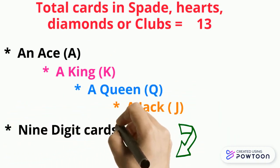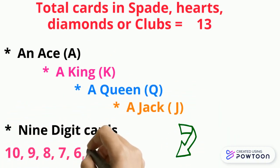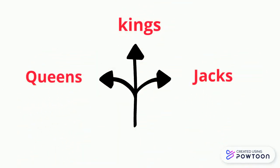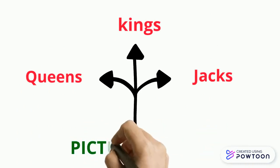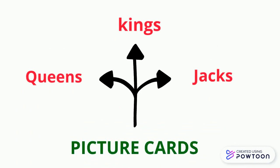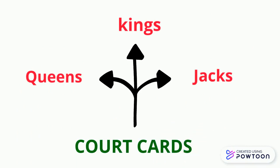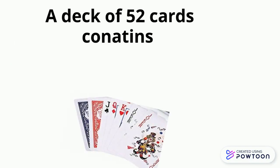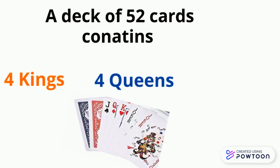The remaining 9 cards are called the digit cards. Kings, queens and jacks are together called face cards, picture cards or court cards. A deck of 52 cards contains 4 kings, 4 queens and 4 jacks.